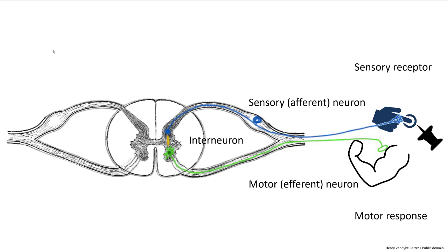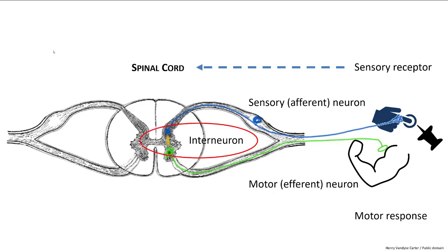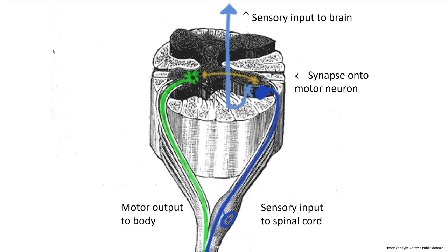We can see the sensory neuron in blue. Pricking a finger on a pin stimulates a pain receptor. That information goes to the spinal cord. To rapidly remove the finger from a pain source, an interneuron is needed, shown in yellow, to immediately activate the green motor neuron going out to the muscle. From this side view, we can see the sensory neuron going to the spinal cord and up to the brain in blue, the interneuron connecting within the spinal cord, and a motor neuron exiting the spinal cord in green.